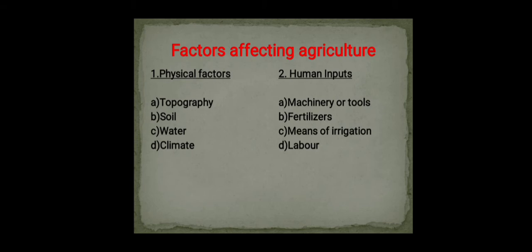There are two main factors affecting agriculture: physical factors and human factors. Physical factors mainly include topography, soil, water, and climate — basically temperature. Human factors include machinery, tools, fertilizers, means of irrigation, and labor.